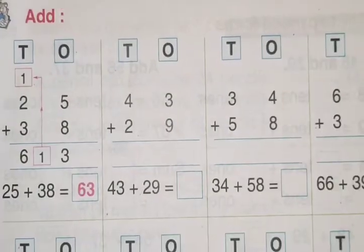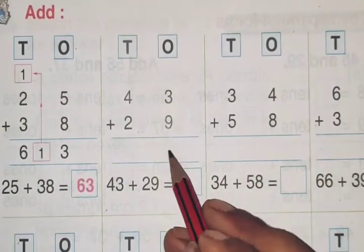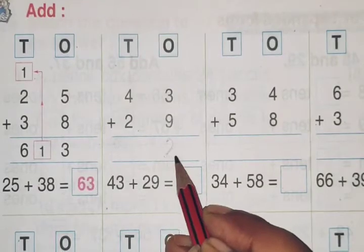Now let's see how I will add. 3 plus 9 is 12. We will write 2 here and carry 1.